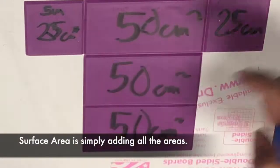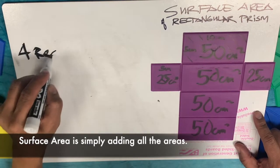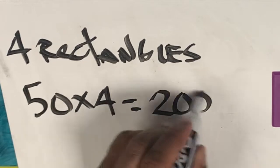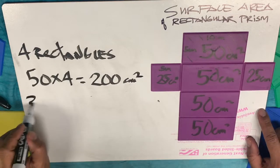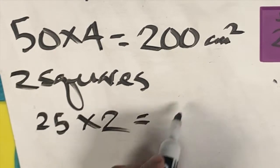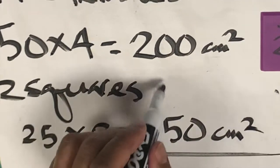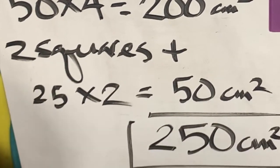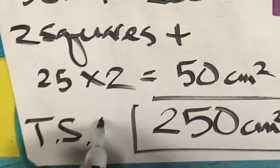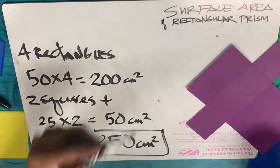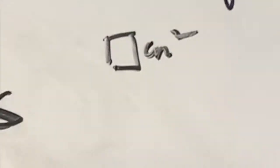Surface area is simply adding all of these areas. For the four rectangles: 50 times 4 is 200 square centimeters. For the two squares: 25 times 2 is 50 square centimeters. Adding them together gives 250 square centimeters — the total surface area of this rectangular prism.